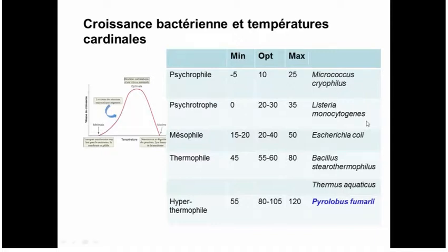Most human pathogens are mesophilic bacteria, with optimal growth temperature of 20–40 degrees — they won't grow above 50 and won't really grow below 15 degrees, so they can't grow in the fridge. Above that, you have thermophilic bacteria that like to grow at 55–60 degrees, and hyperthermophilic bacteria that prefer temperatures above 80 degrees. These are specialists living in hot springs or hydrothermal vents at the bottom of the ocean, where temperature can exceed 100 degrees due to high water pressure.